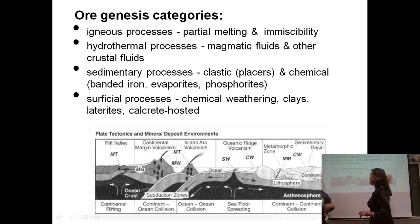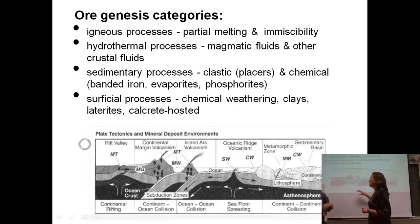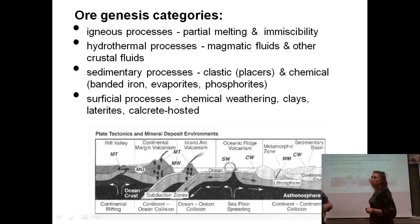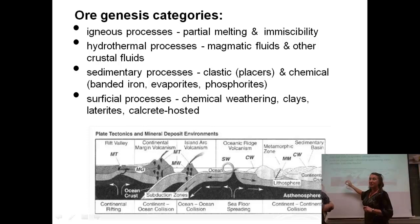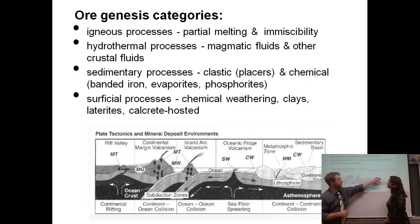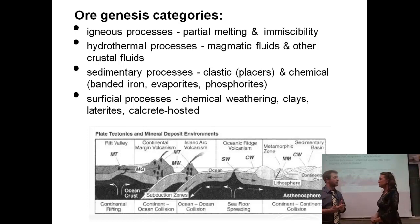We've got some of those environments shown here, and you'll want to take some notes. We're going to talk about igneous processes related to rift valleys and ocean ridge volcanism — both divergent boundaries. We'll also talk about hydrothermal processes, and something called VMS, which we'll get to, related to convergent boundaries at island arcs and continental-oceanic convergence. Sedimentary and surficial processes will be more toward the continental areas.